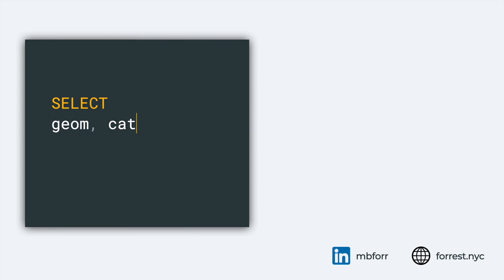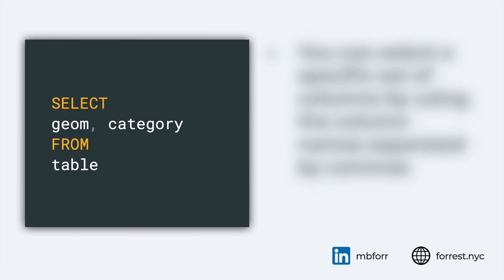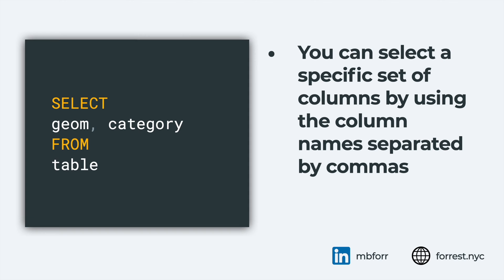You can also select specific columns from a table. In this case, we're going to grab just the geometry and the category. You separate those by a comma, and this query would return just those two columns from that table — instead of everything, it grabs two. You can grab as many as you want.